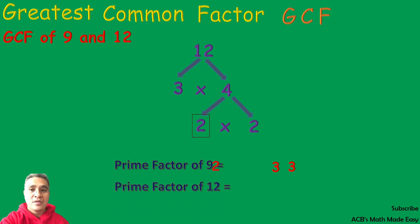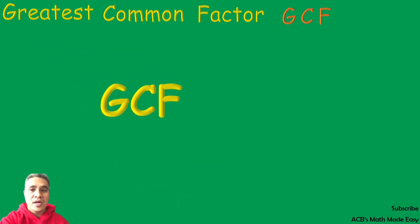4 can be factored out by 2 times 2. The prime factors of 12 are 2, 2, and 3. 9 and 12 have only one common factor of 3. So the greatest common factor of 9 and 12 is 3.